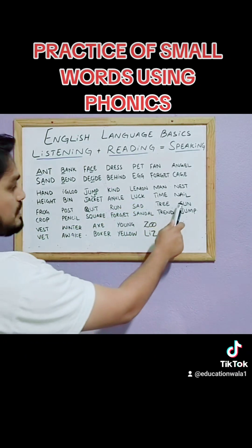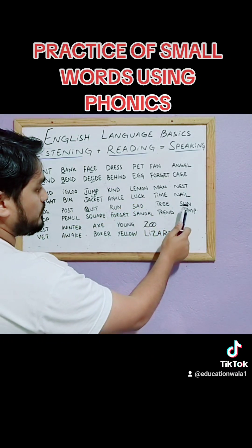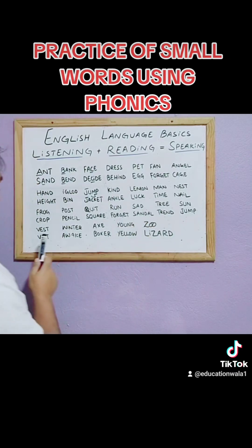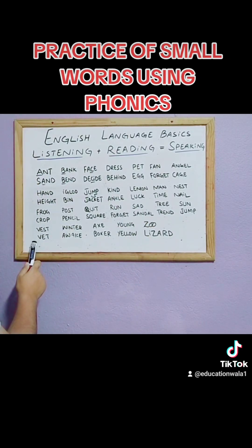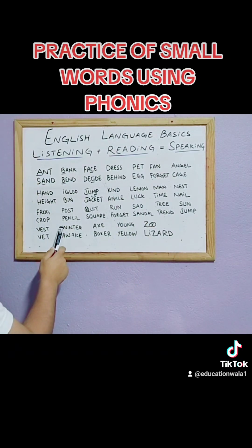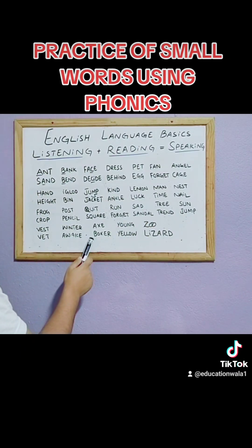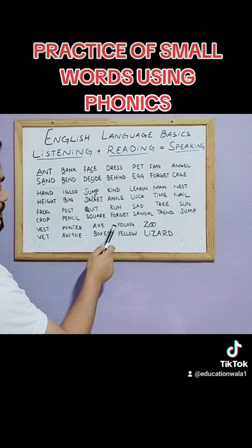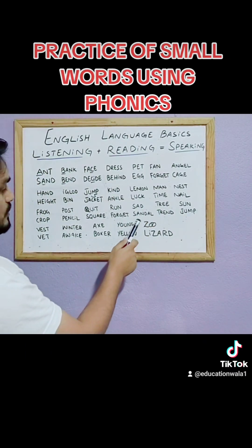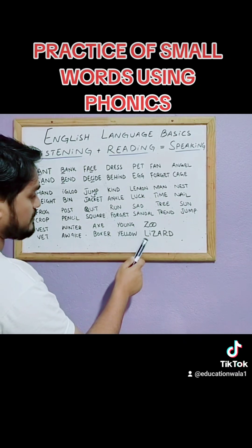Sun, jump, west, wet, winter, wake. X — boxer. Young, yellow. Zoo, lizard, introduce, third.